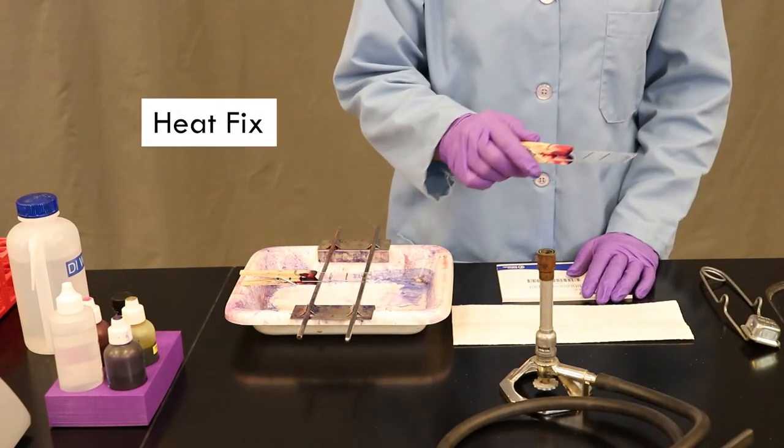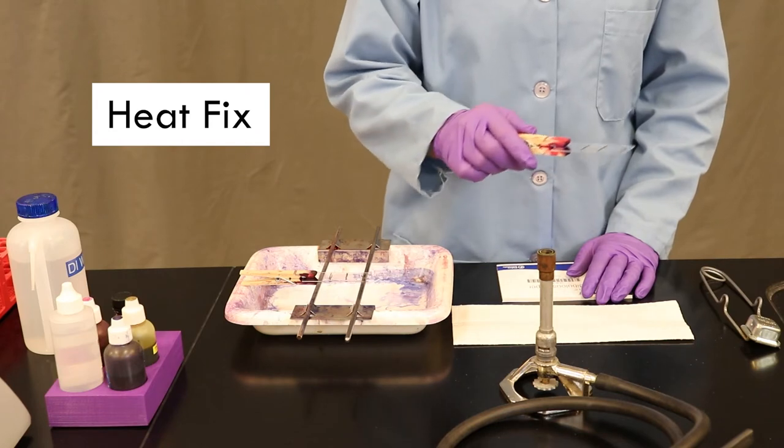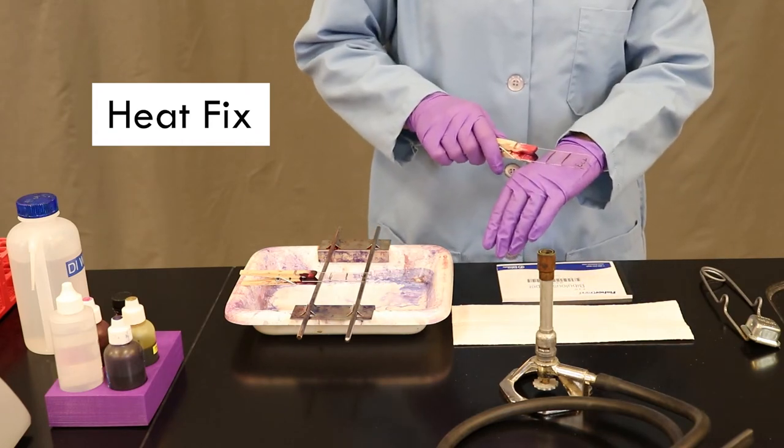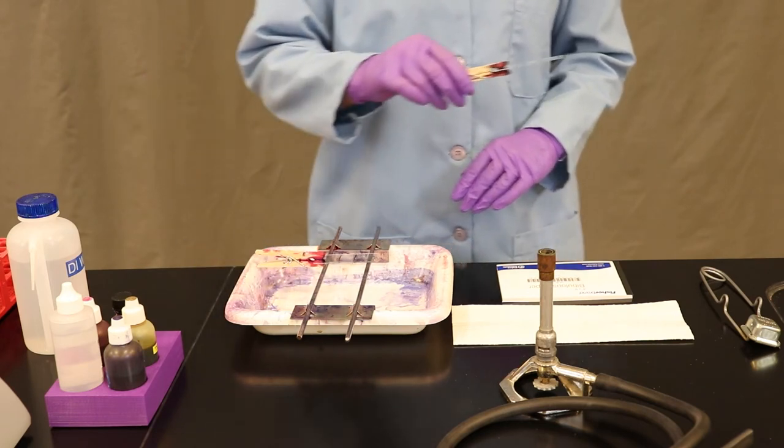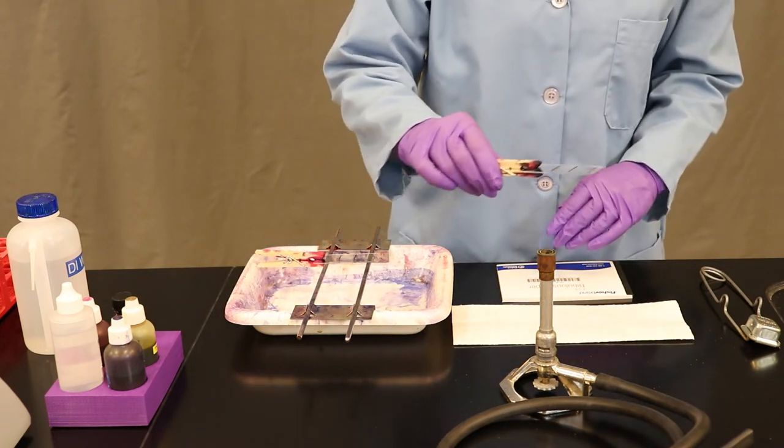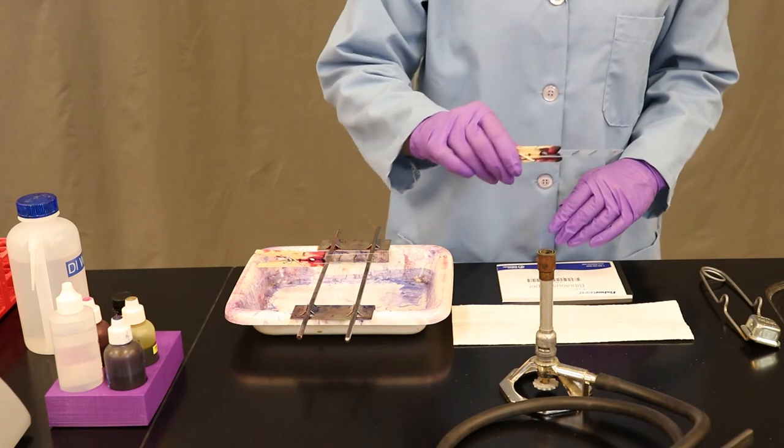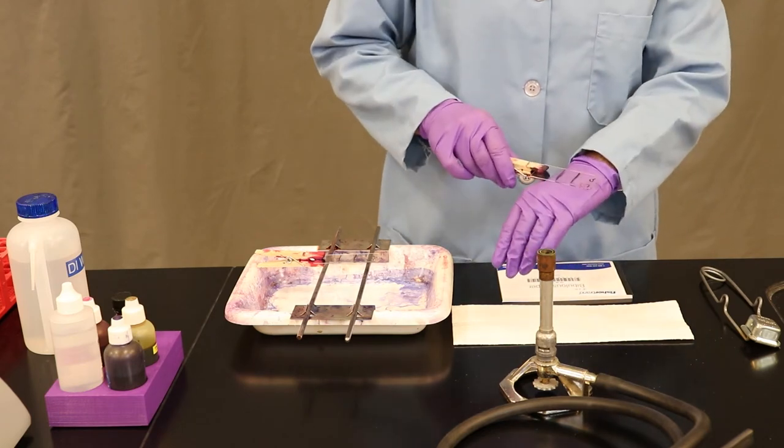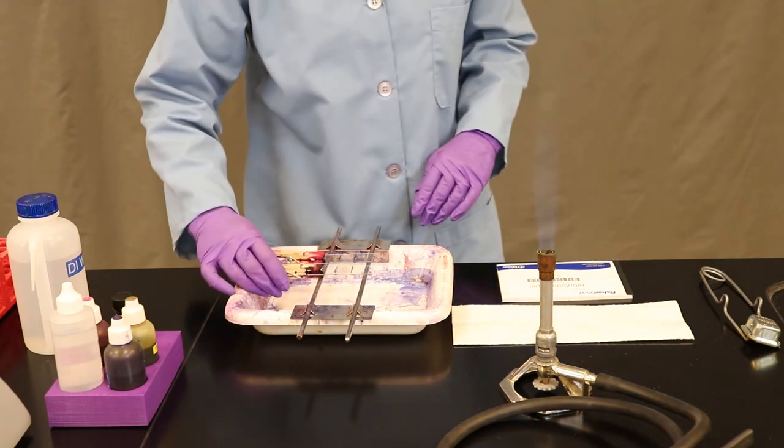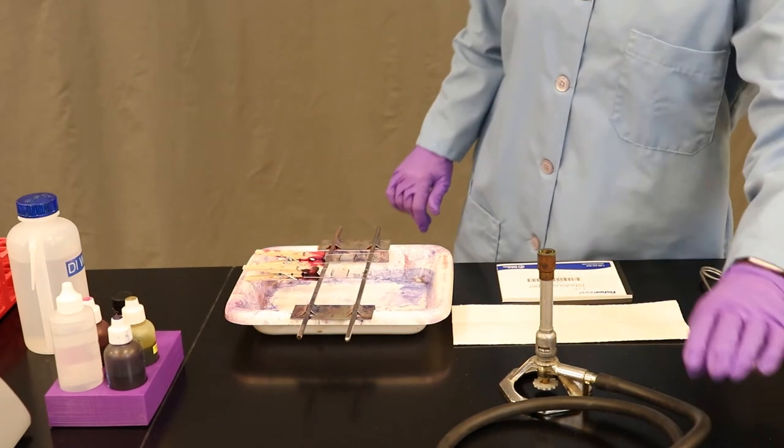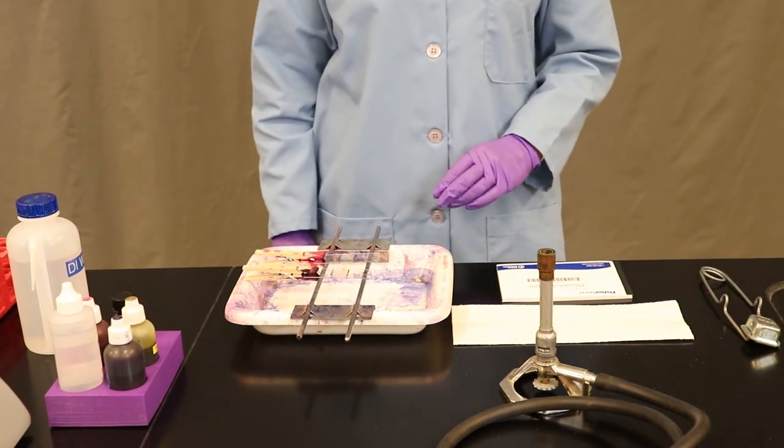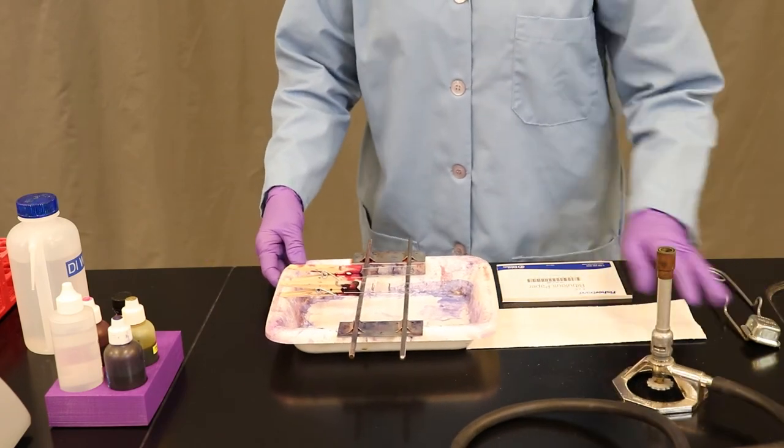The next step is to heat fix. We heat fix by using a clothespin and passing the glass slide through the flame several times. You'll notice here that what we're attempting to do is kill the bacterial cells and adhere them to the slide. The slide should be warm, but not hot to the touch. Once you're finished with your heat fix step, you're done with your Bunsen burner.